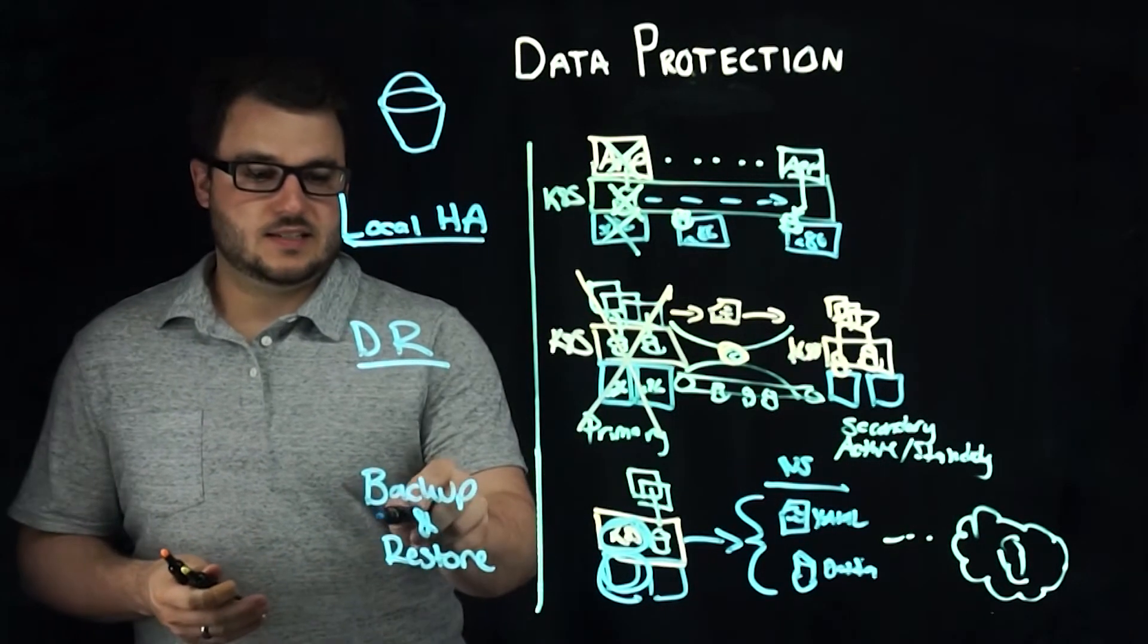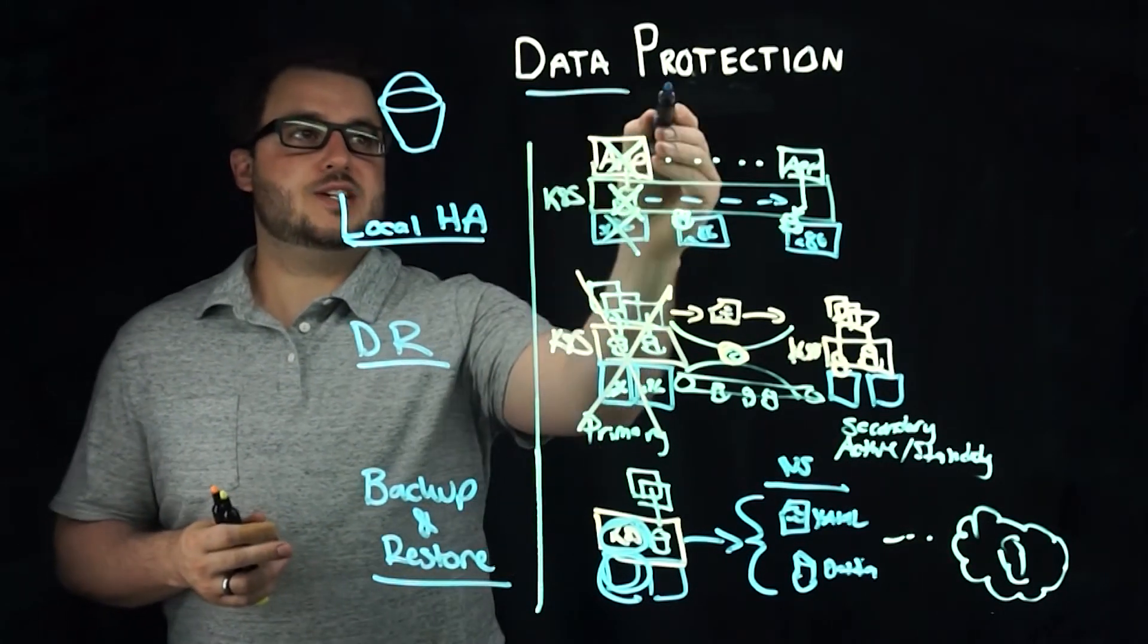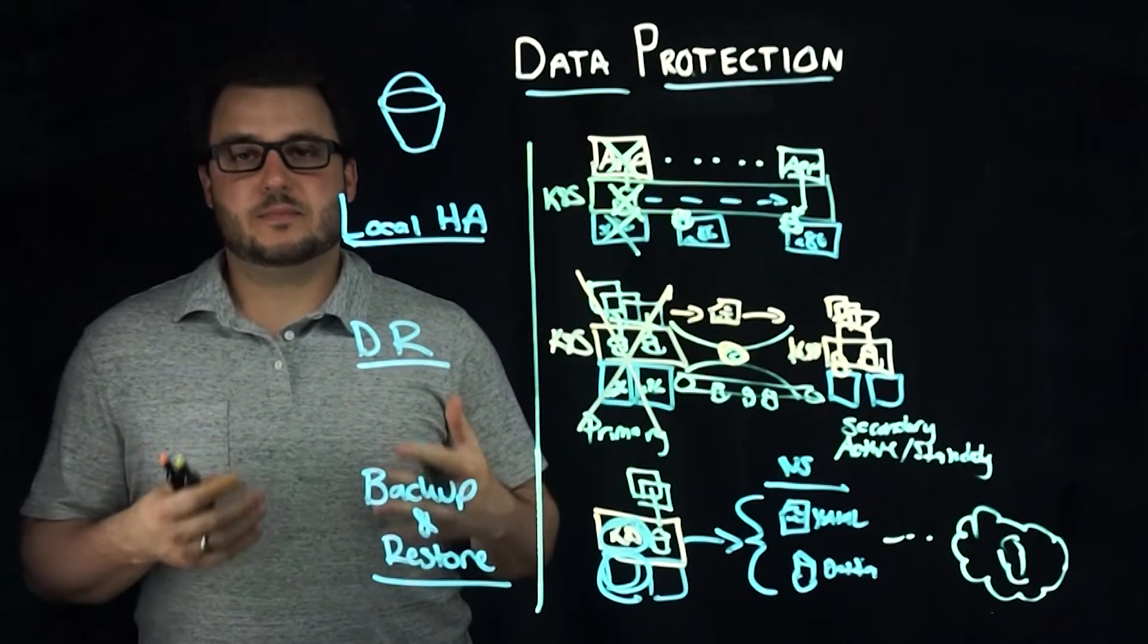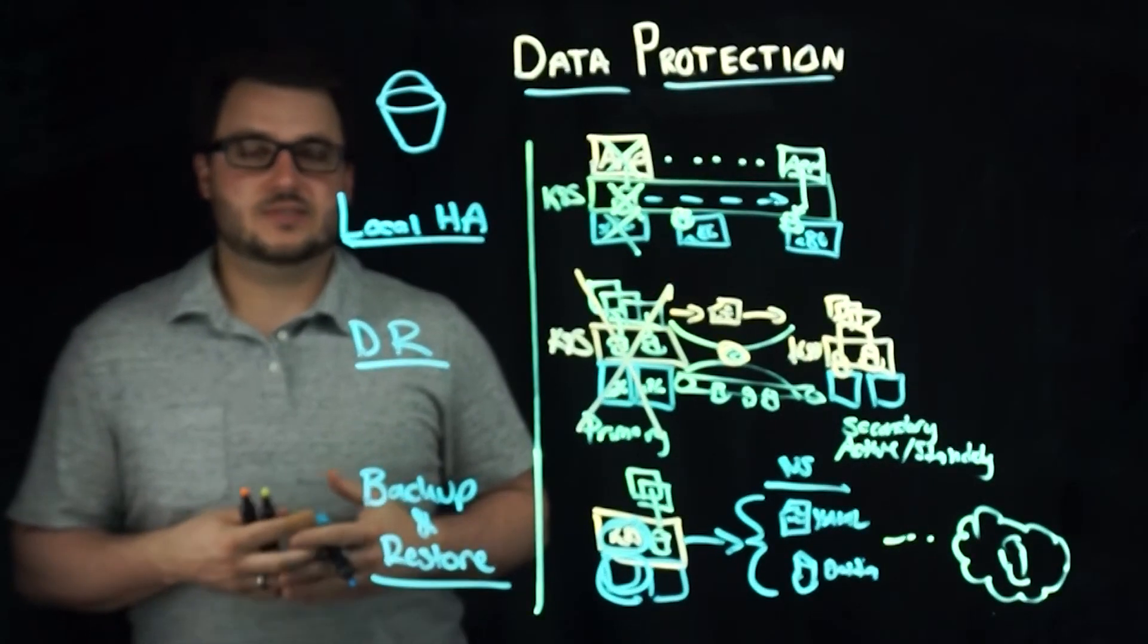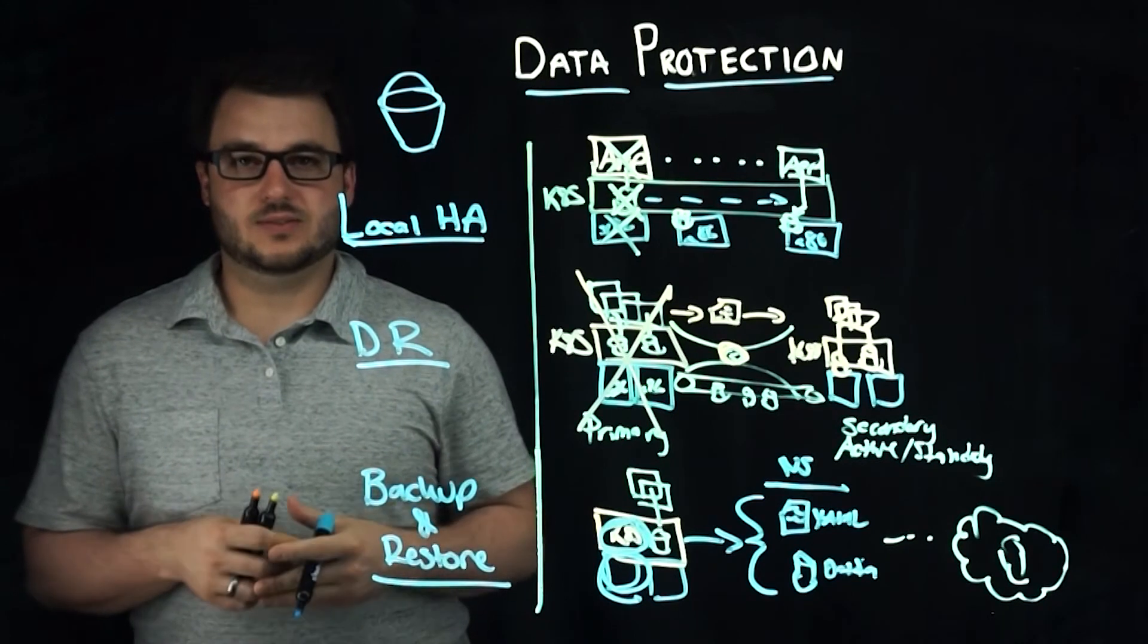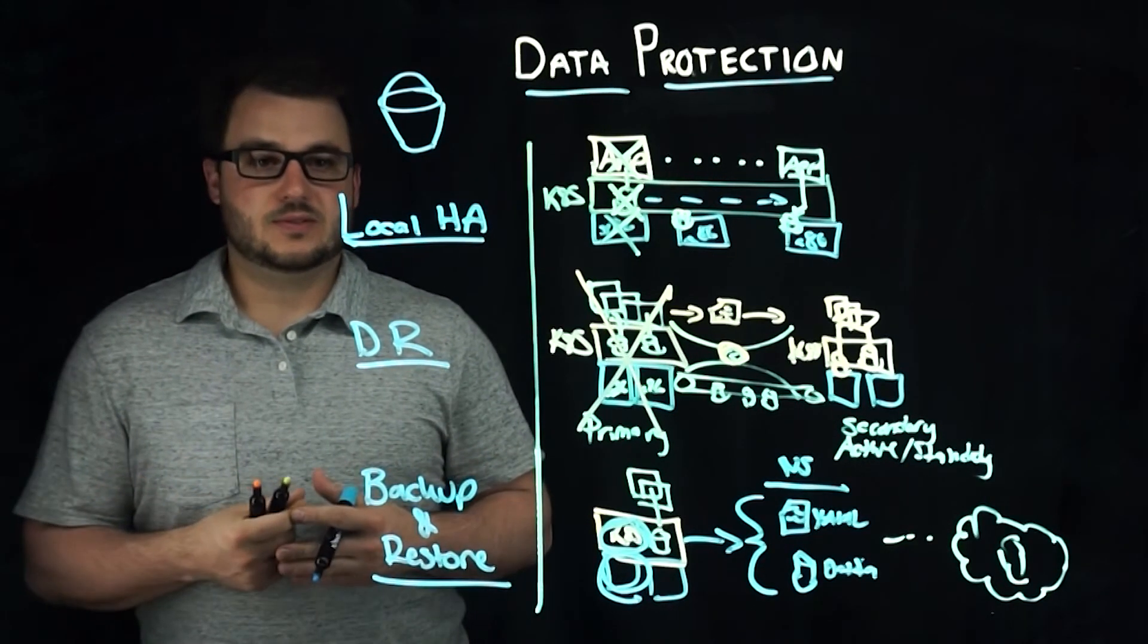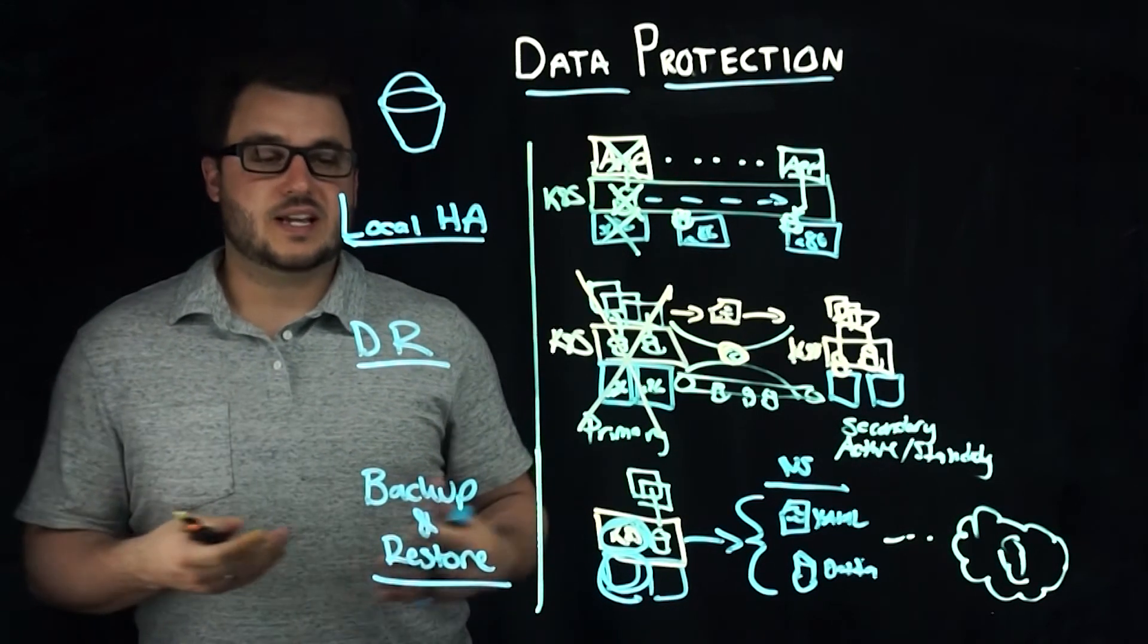And again, that's the backup and restore. So to recap, data protection buckets—we're really talking about what different perspectives you need protection at in terms of high availability at the local kind of availability zone, or single cluster or cross availability zones, then there's disaster recovery where a natural disaster or a security issue renders an entire data center or site unable to be used.